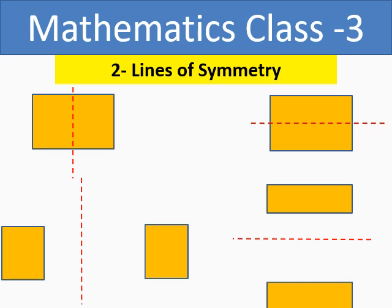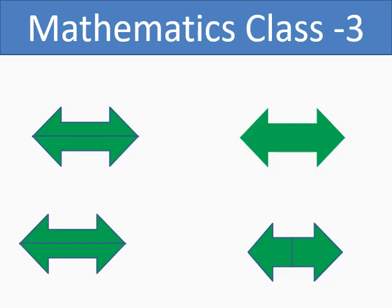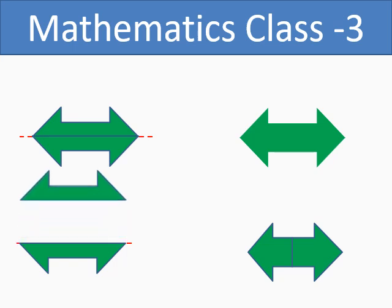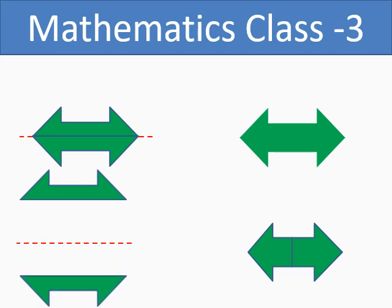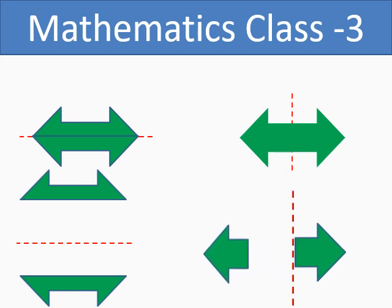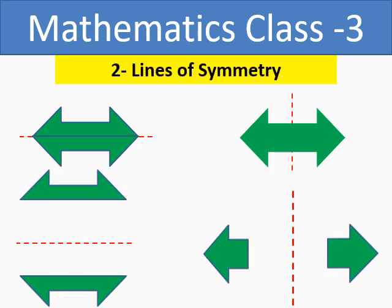Let us take one more example with this shape. Draw the horizontal line passing from the middle — you will get two equal halves along this horizontal line, so we have a horizontal line of symmetry. Similarly, draw the vertical line passing from the middle — again you will get two equal halves along the vertical line. So we have two lines of symmetry in this object.